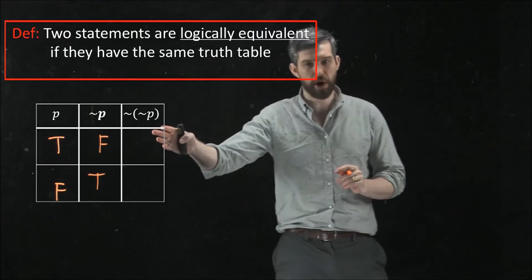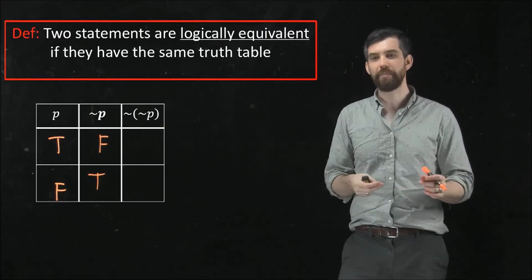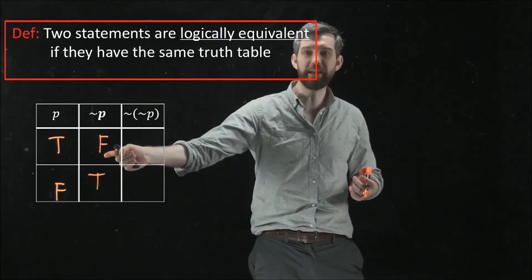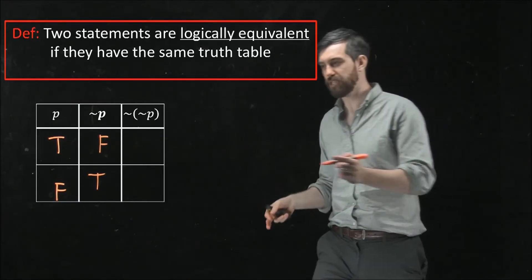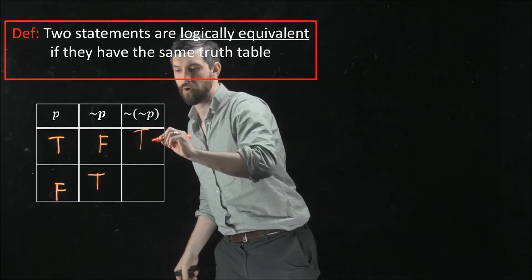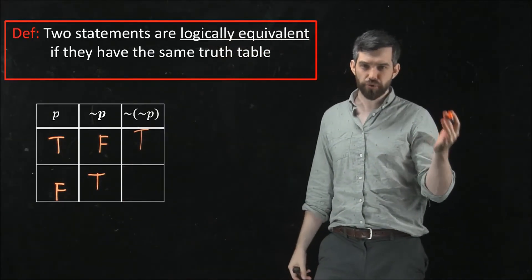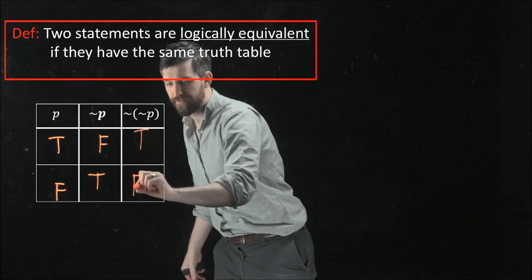Now, for the third column, I'm looking at not not p. So I'm going to not p and taking the opposite of that. If not p is false, then the negation of being false is true. So I'm going to put a true over here. And likewise, if my not p is true, then the negation of a true is false. So I'm going to put a false down here.